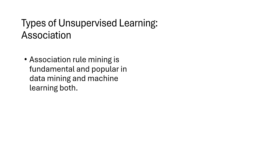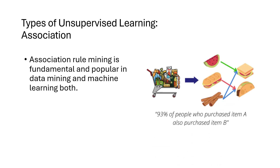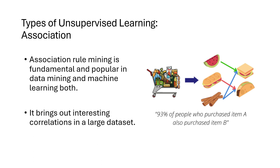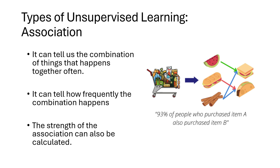The last type is association rules. Association rule mining is very fundamental and popular in both data mining and machine learning. Look at this picture — if you've shopped online you've seen this kind of recommendation: '93% of people who purchased this item also purchased that item.' That is association rule. The idea is to find interesting correlations in large datasets. Association rules can tell us the combination of things that happen together often, and how frequently — like this 93% example. The strength of association can also be calculated, for example if item A occurs once and item B occurs 10 times.